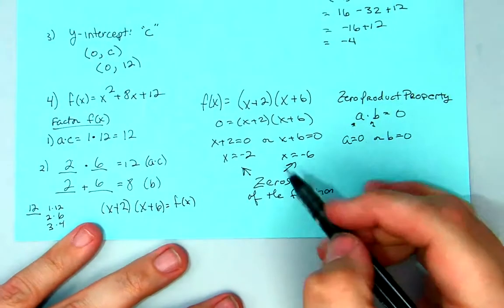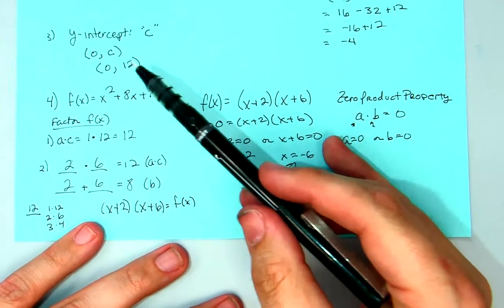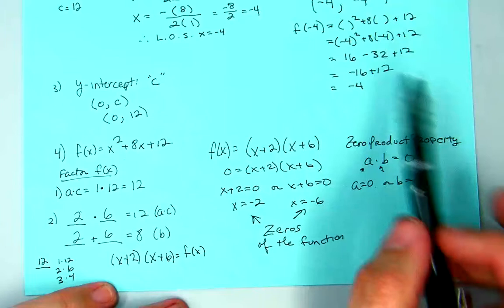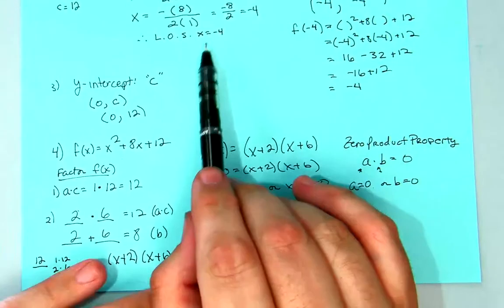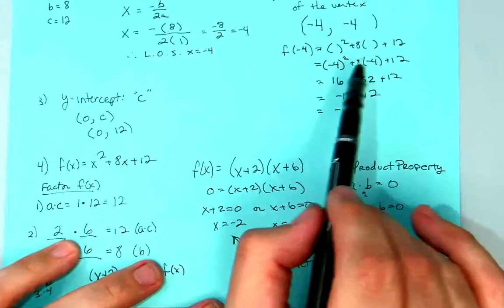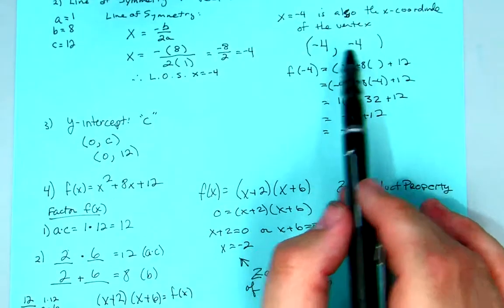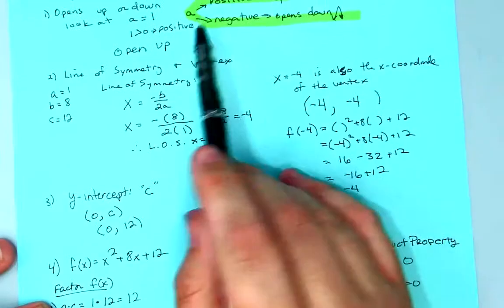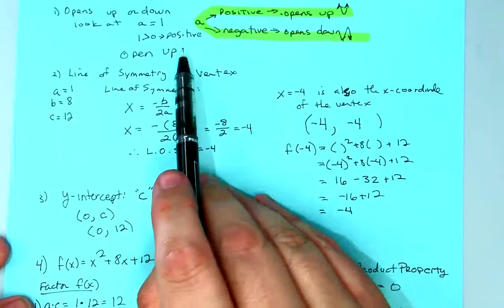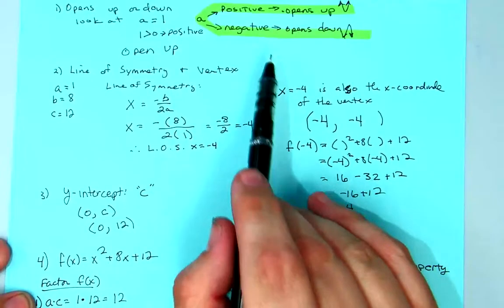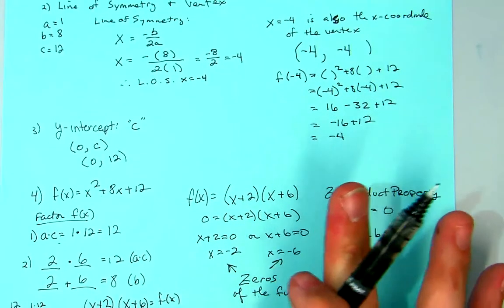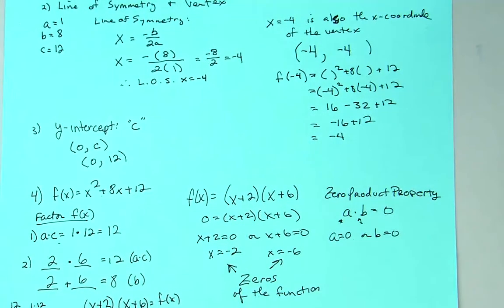So now I have my zeros, I have my y-intercept, I have my line of symmetry, I have my vertex, and I have whether it opens up or down. Now I can take all of this information and put it into a graph.